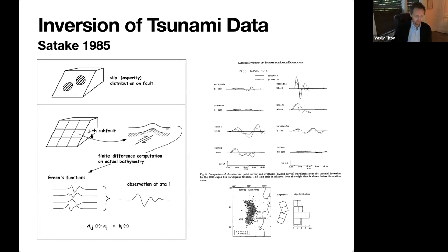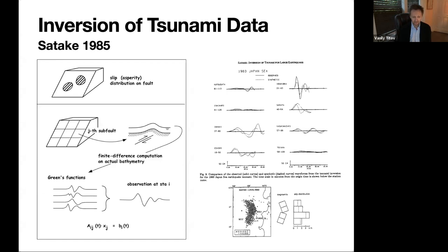He was trying to see if he could learn about earthquakes by measuring the tsunami. The way he did it is very similar to the finite fault solution now employed with seismic waves: he subdivided the potential fault into subsections and generated separate tsunami solutions — Green's functions — from each subsection using a tsunami model.